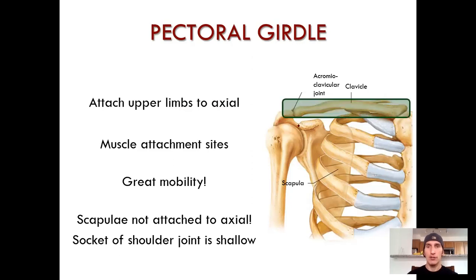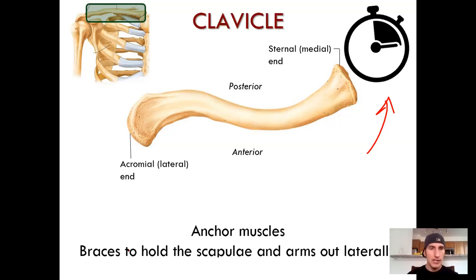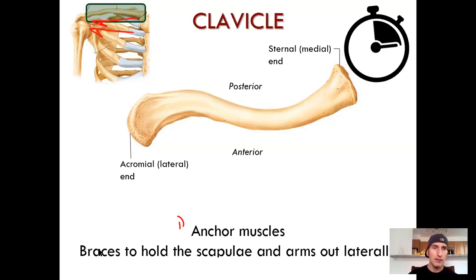Let's focus on the clavicle. The clavicle anchors muscles — that's one of its functions. Second, it braces and holds the scapulae and arms out laterally, displacing your scapula and humerus away from the midline. It's a kind of functional scaffolding together with the scapula. Towards the midline or medially, you have the sternal end of the clavicle — a very blunt end that'll be obvious when we feel it in lab.